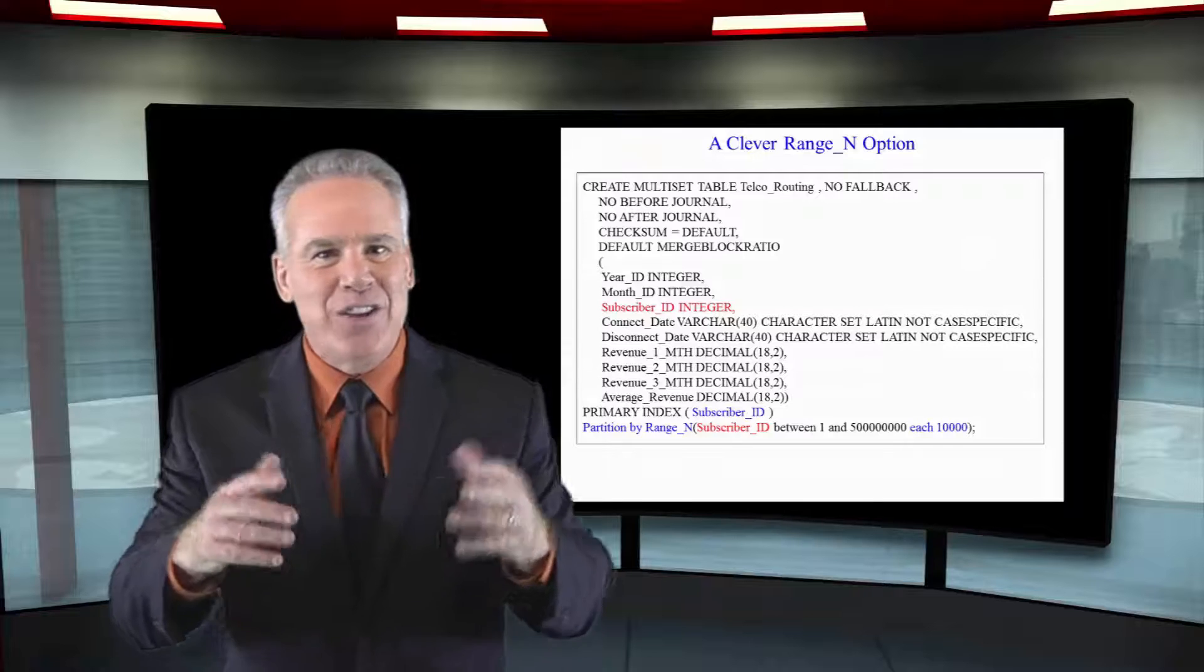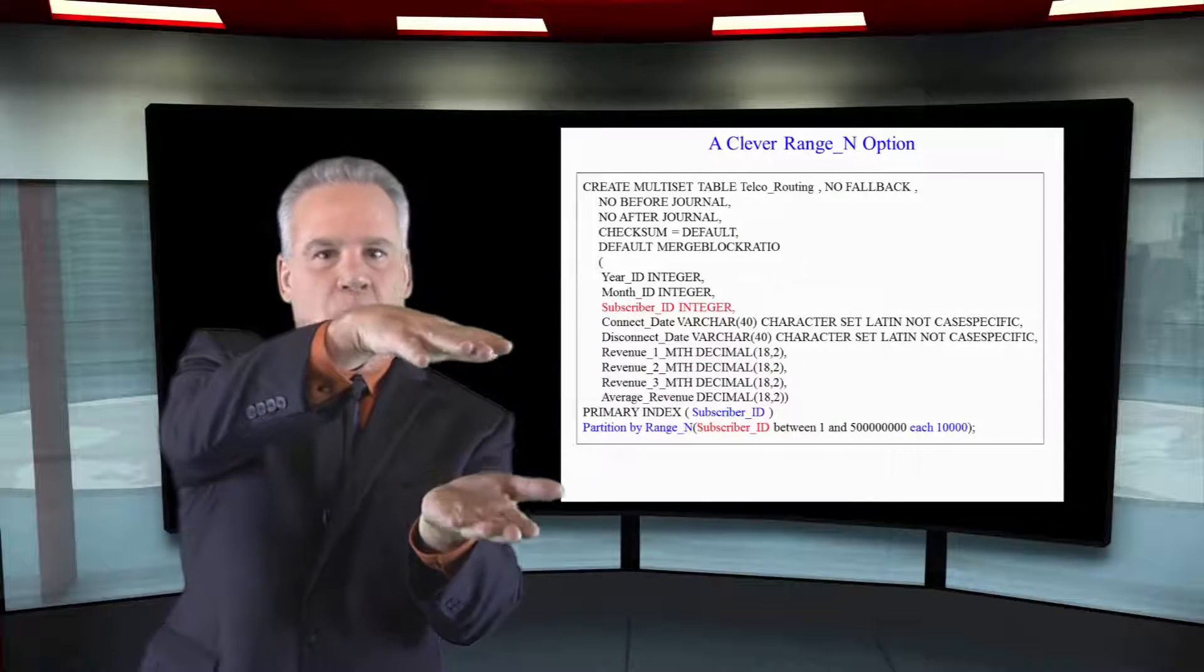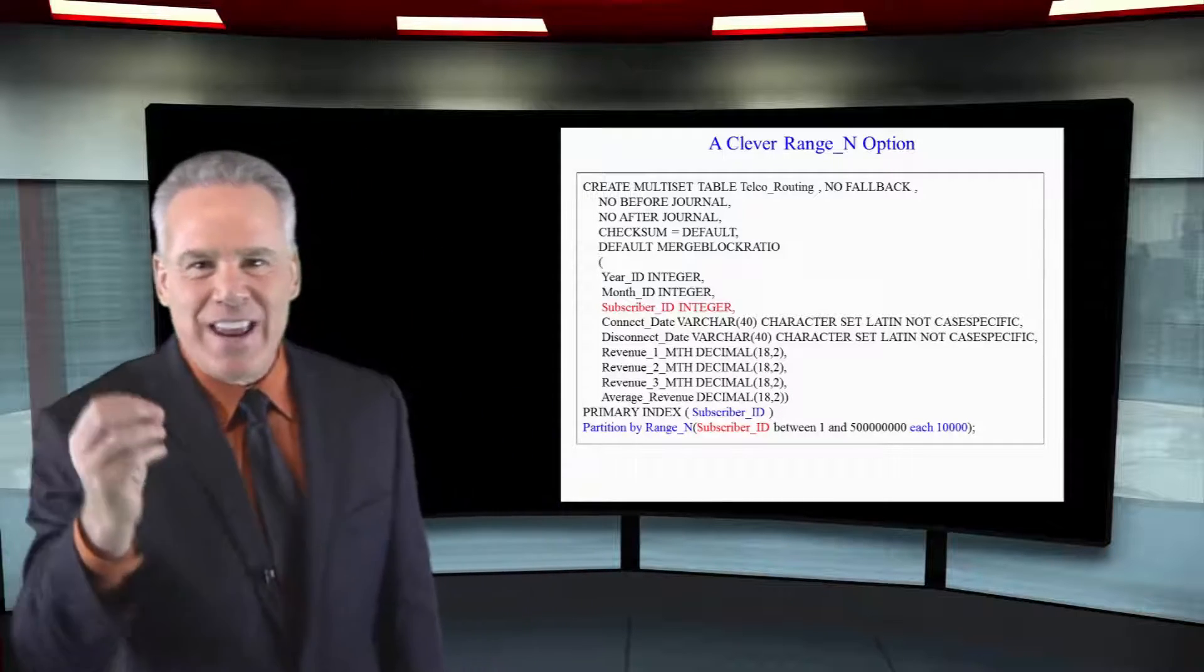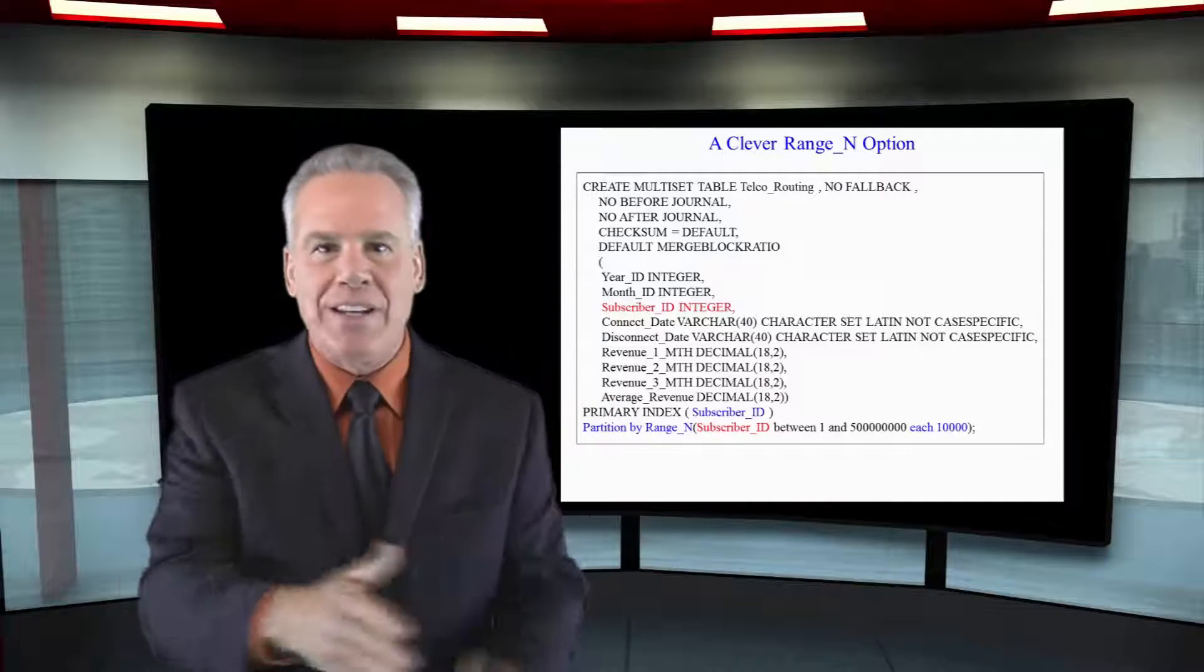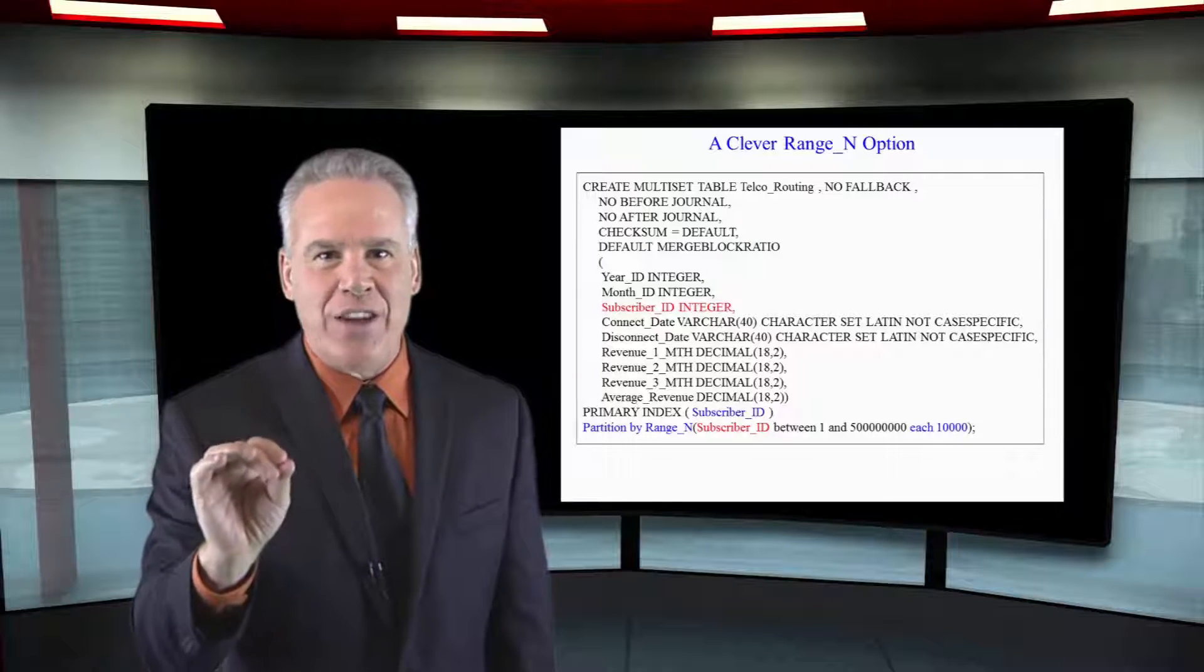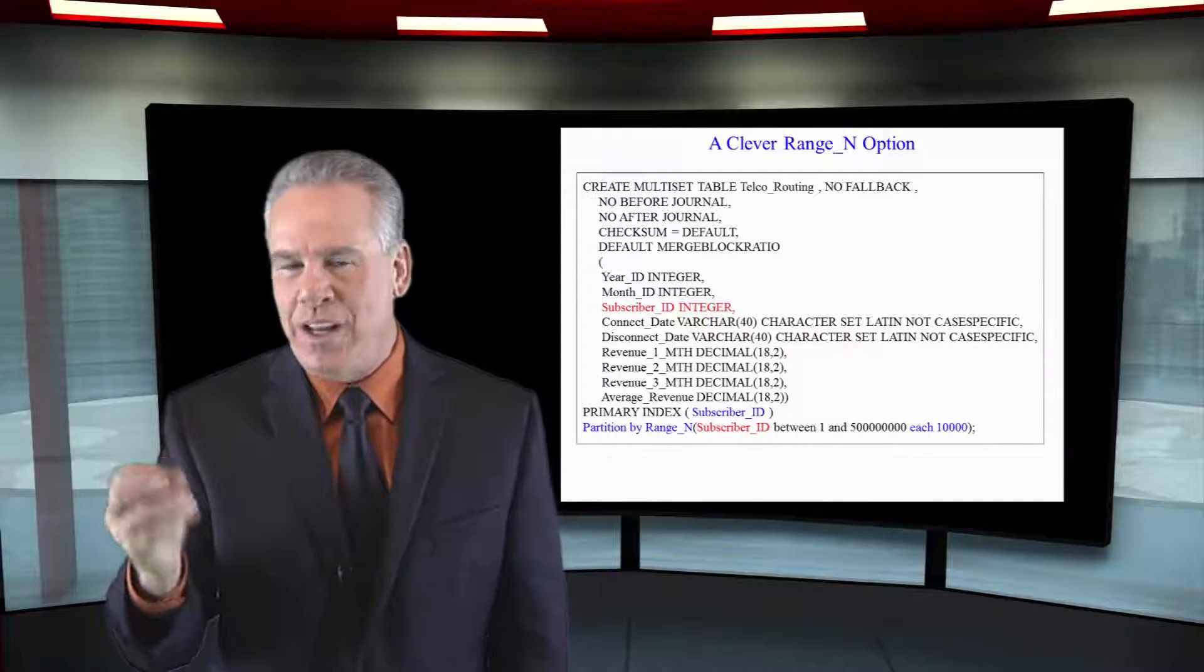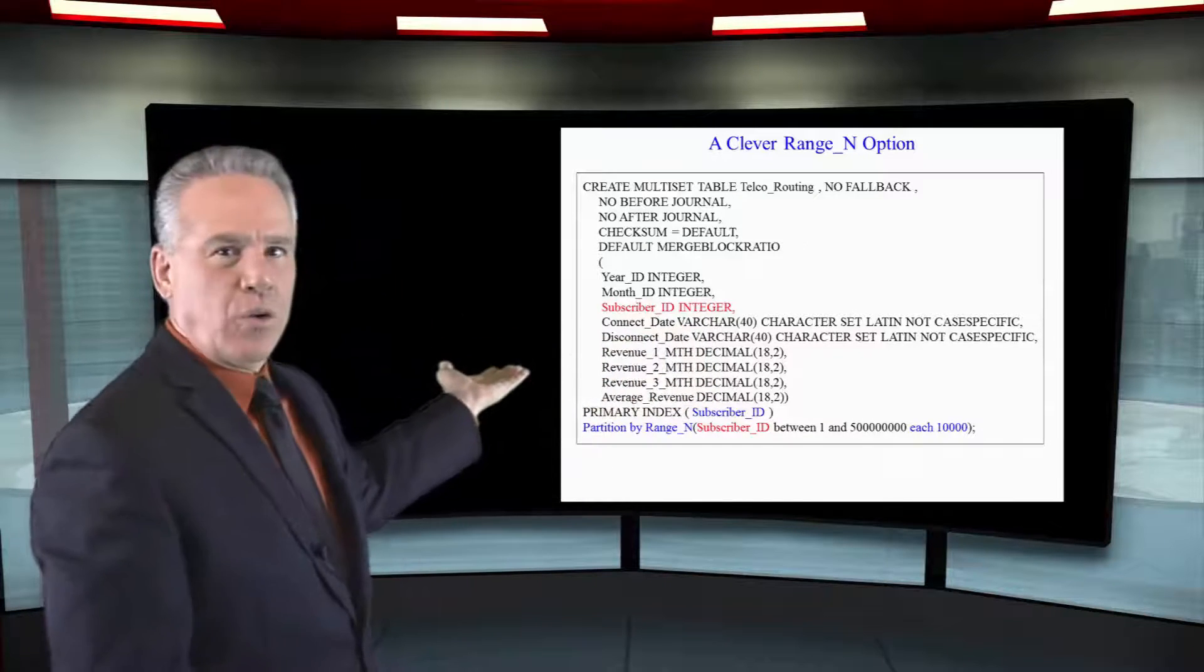Teradata is going to have each AMP put all of 1 to 10,000, next 10,000, next 10,000, and this is going to save queries a ton of time when people use range queries between this Subscriber_ID and this Subscriber_ID. It's not going to do a full table scan. You'll see I eliminated a ton of partitions here. If you know your user community and what queries they're writing, you can take advantage of really great performance tuning by partitioning by something creative just like this.